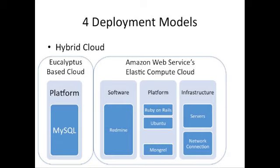This is just one way to use multiple types of cloud to deliver a system. Another common term in the cloud community is cloud bursting. This means that if a system gets too large to be contained in, say, your private cloud, you can expand into a public cloud like Amazon or Rackspace.